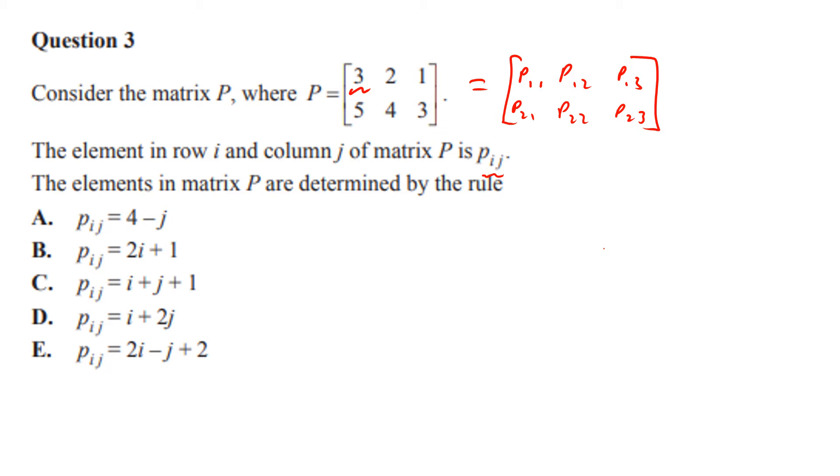In this case, the p we're doing is this one, so our i and j values are 1 and 1. If you have 4 minus 1, you get 3, so that's okay.